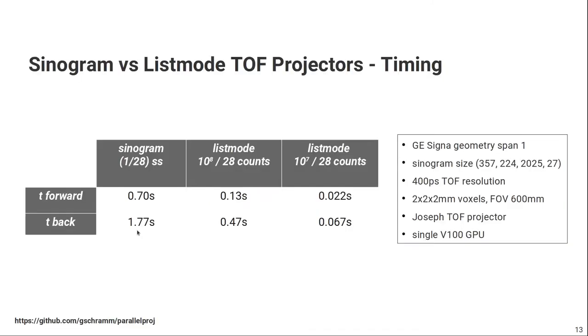To quantify the speedup that we gain by the list-mode projectors, I've done some tests for the GE Signa geometry. It's a PET scanner with 25-centimeter axial field of view and 400-picosecond time-of-flight resolution. I've used the Joseph TOF projector on a single V100 GPU. When we do the projections in sinogram mode for one subset, the forward projection takes 0.7 seconds and the back projection is 1.7 seconds. You can see, if we process 1/28th of a list-mode file with 100 million counts, the forward projection time is much faster. It's roughly a factor of 5 faster. The same holds for the back projection. So in total, we save approximately 2 seconds. And of course, if you have shorter list-mode files, so 10 million counts, we can see that the speedup is, of course, even bigger. So we save around 2.4 seconds.